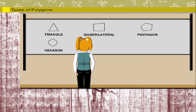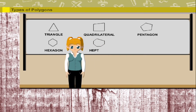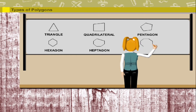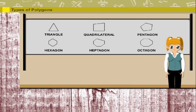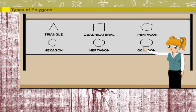A seven-sided heptagon and an eight-sided octagon. All these shapes are examples of polygons. Poly means many and gons means sides. So figures with three or more sides are called polygons.